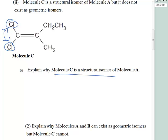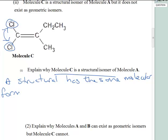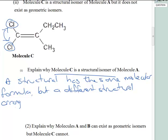So in answering this question about why is it a structural isomer it's probably best to give the definition of what a structural isomer is. It of course is a structural isomer has the same molecular formula but a different structural arrangement. Molecule C is structurally different.